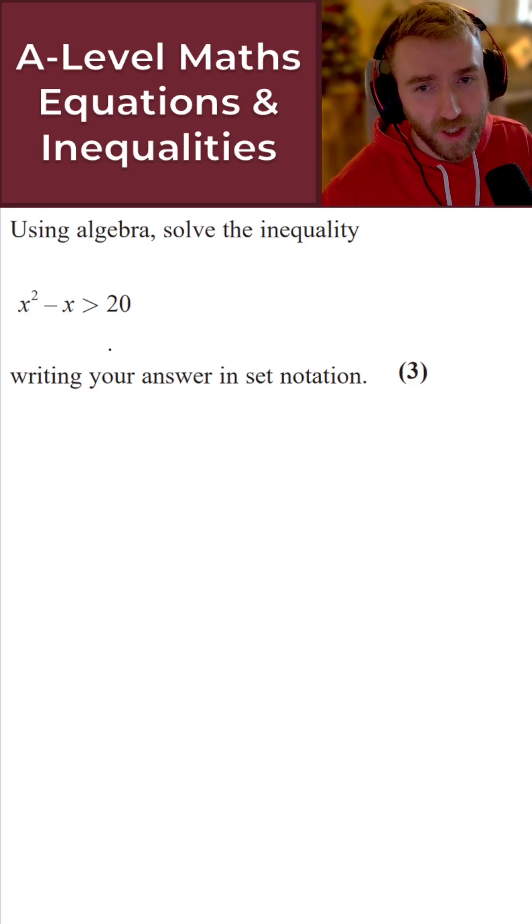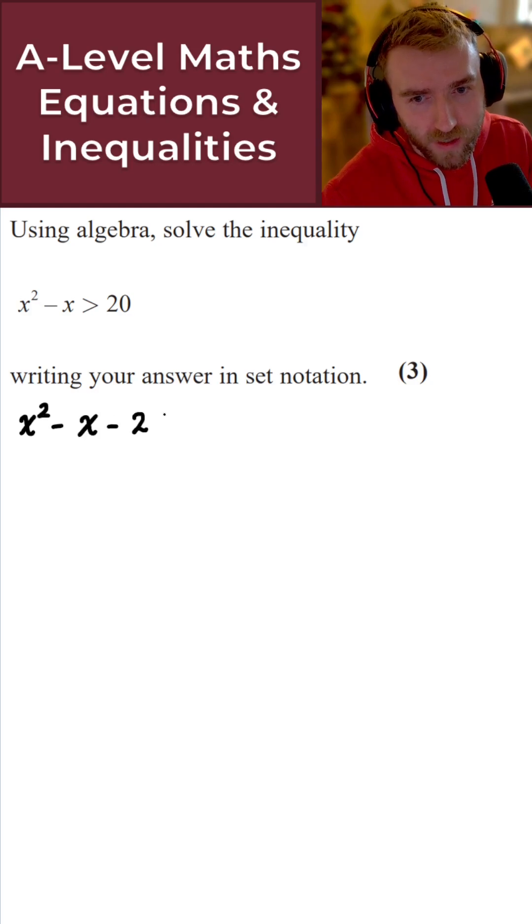So first things first then, let's just subtract 20 from both sides here. We get x squared minus x minus 20 is strictly greater than zero. Perfect.